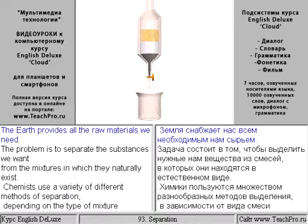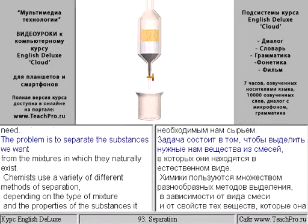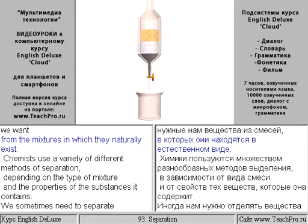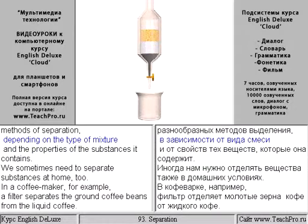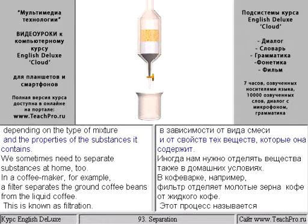The earth provides all the raw materials we need. The problem is to separate the substances we want from the mixtures in which they naturally exist. Chemists use a variety of different methods of separation, depending on the type of mixture and the properties of the substances it contains.